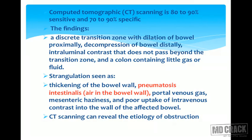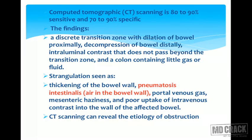CT scan is 80–90% sensitive and 70–90% specific. Findings on CT include a discrete transition zone with dilation of bowel proximally, decompression of bowel distally, intraluminal contrast that does not pass beyond the transition zone, and a colon containing little gas or fluid. Signs of strangulation on CT include thickening of the bowel wall, pneumatosis intestinalis (air in the bowel wall), portal venous gas, mesenteric haziness, and poor uptake of intravenous contrast into the wall of the affected bowel. CT scan can also give the etiology of obstruction.